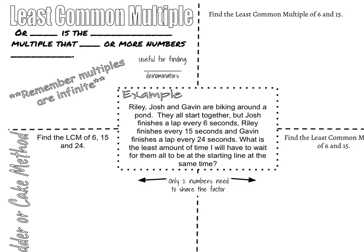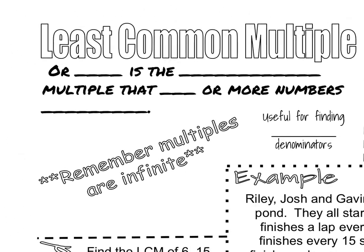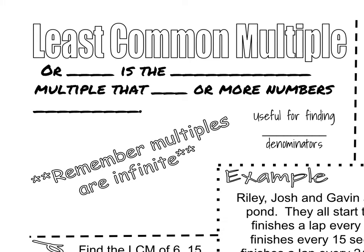Today we are going to be taking a look at least common multiples. Make sure you are following along and filling in your notes as we go. So least common multiple, or LCM, is the smallest multiple that two or more numbers share or have in common.